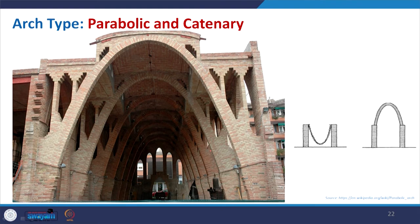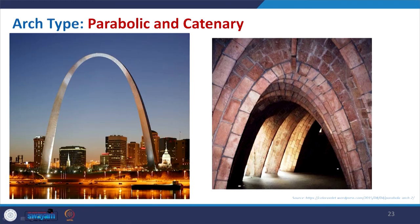Coming to the parabolic and catenary arch — as already discussed, it is just the reverse of the hanging chain that gives you the catenary form. One example shown is made with masonry. Another example is a great arch where masonry or other materials are used. This huge structure is self-supporting and really creates an interesting space.